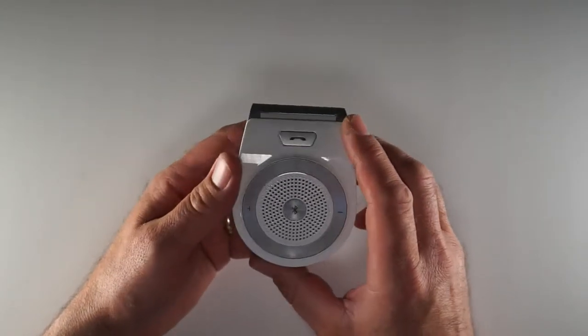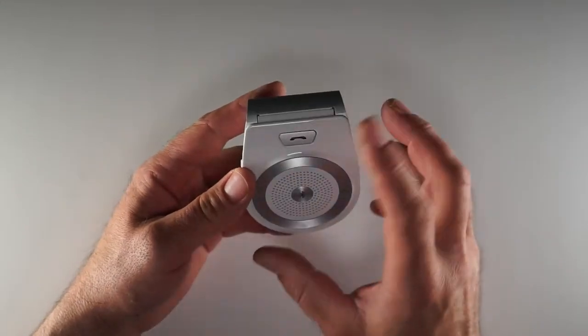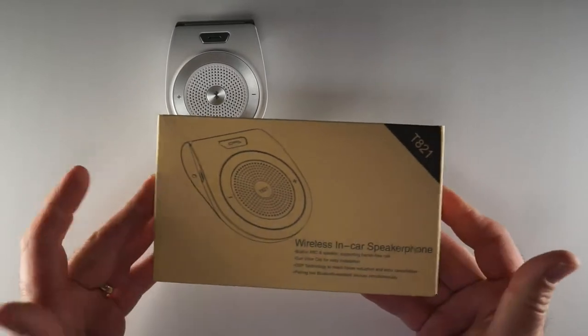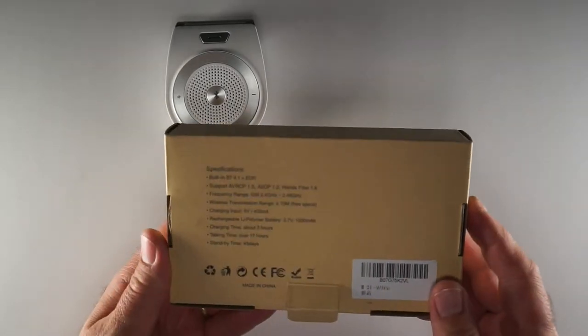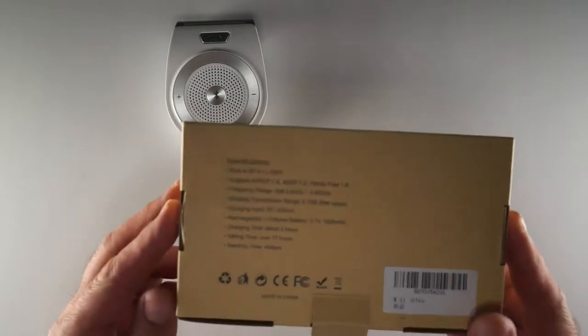It also tells you your battery warning, so if your battery gets low it'll say 'battery low.' It tells you 'battery high' when it's fully charged. Doesn't tell you about your medium, but that's fine. This is the box that it came with. Pretty straightforward. On the back it has some specifications you can read through.